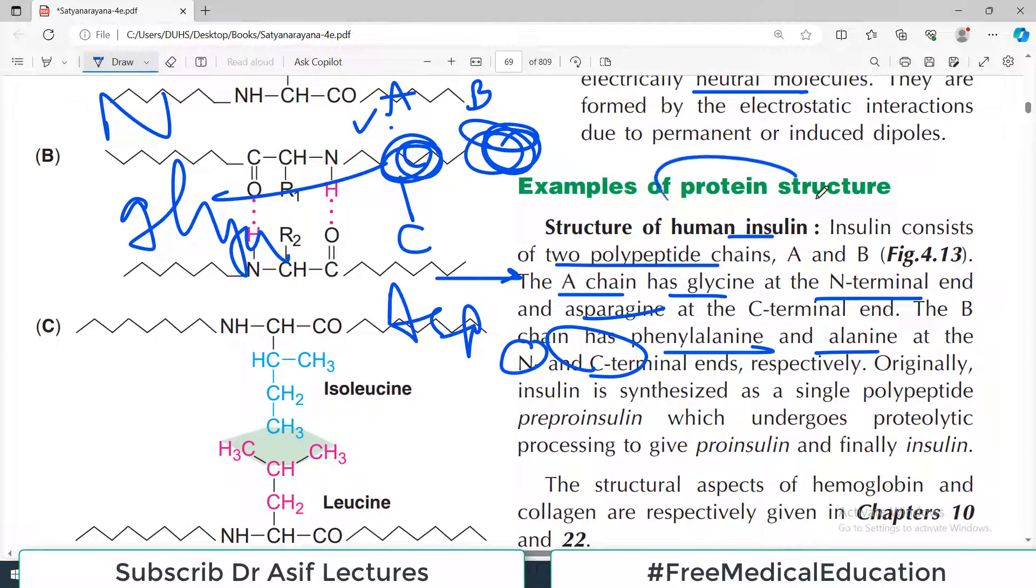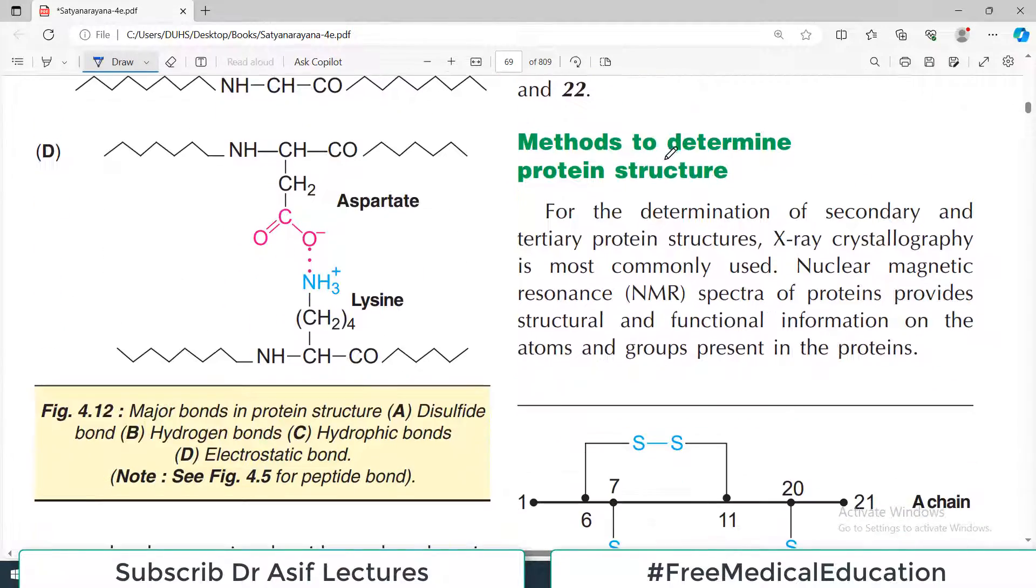There are methods to identify the structure - that is beyond your scope, but at least remember a couple of names. For example, X-ray crystallography is a technique, just like X-ray to see if your bone is fractured. X-ray crystallography or NMR, nuclear magnetic resonance - they give you the structure of the protein. These are the two techniques which you can remember.